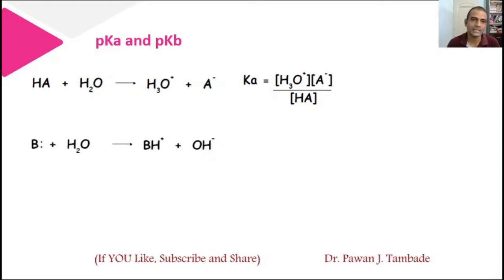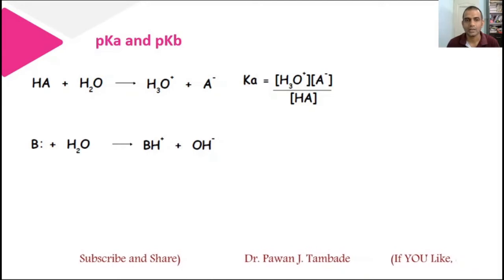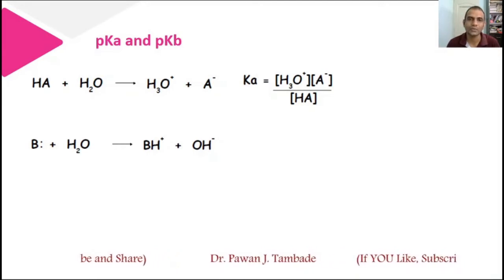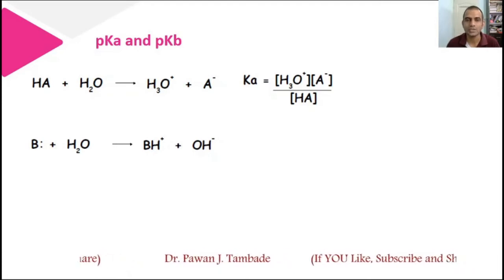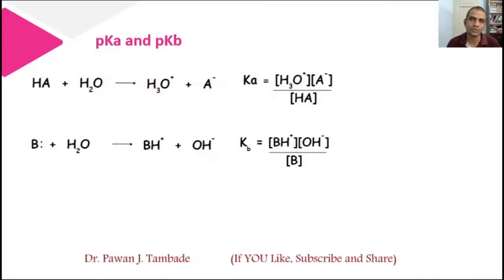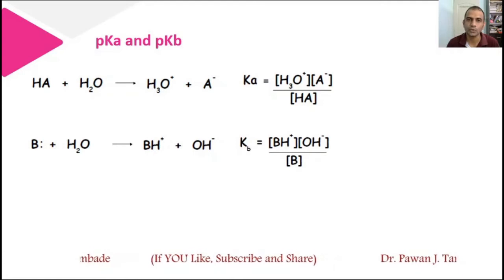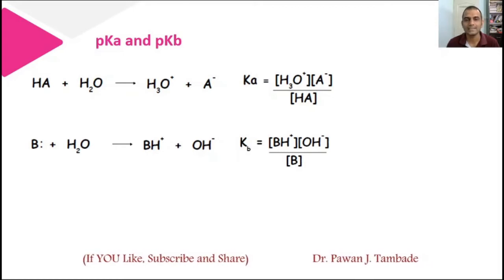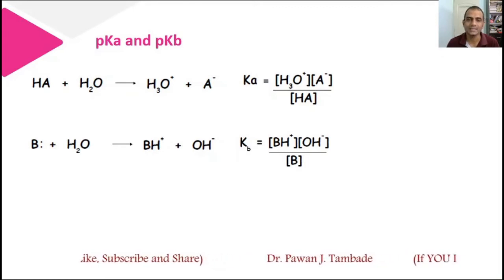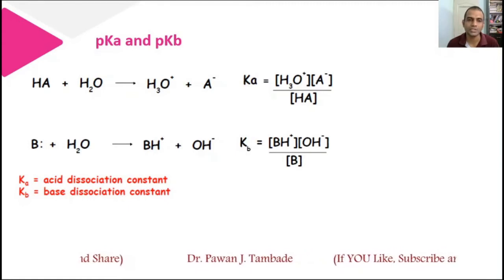In the same way, if you look at this reaction where B, that is a base, reacts with water — it accepts a proton from water and there is a formation of BH⁺ and OH⁻ ion. The dissociation constant for this reaction is given by: Kb = [BH⁺][OH⁻] / [B]. In this case also, concentration of water is omitted as it is present in large amount. So Ka and Kb are acid dissociation constant and base dissociation constant respectively in these two reactions.